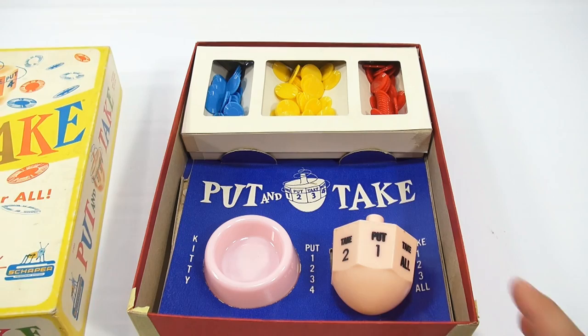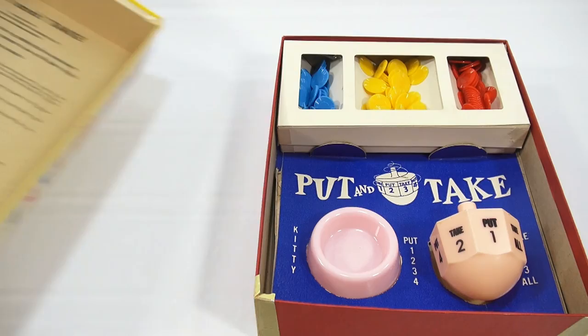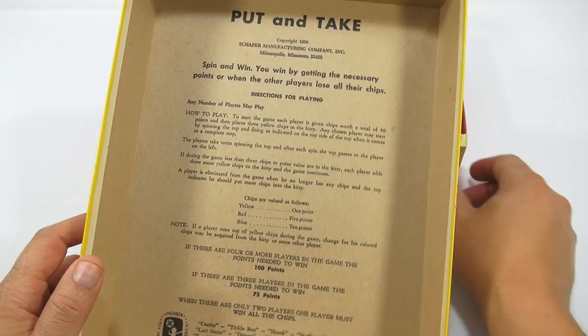So there's nothing on the bottom but let me just open it up so you can see the inside. So this is put and take. Here's your kitty and then here's your spinner and then your colored pieces. Now each of the colored pieces is a different point value which they show on the inside of the instructions.